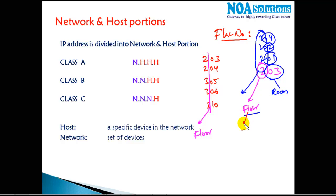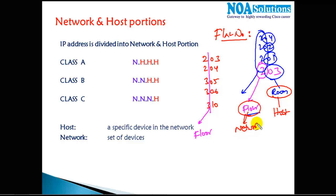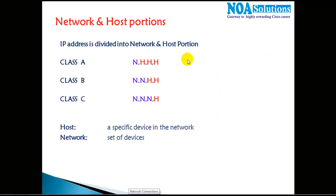The part that is not common identifies a specific room on that particular floor. This has a similarity to network and host: a single room is analogous to the host, and the floor part is analogous to the network. The addressing in IP works in a similar way — let's understand how it applies to IP addressing.